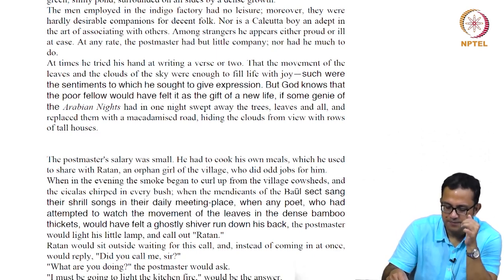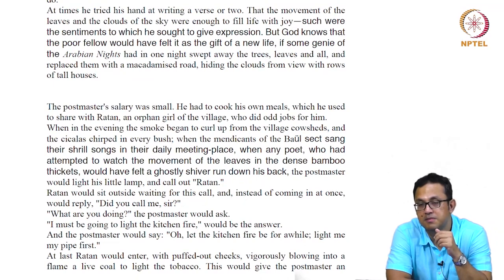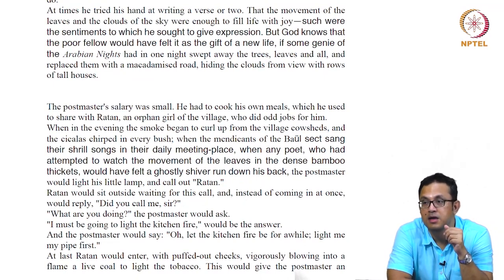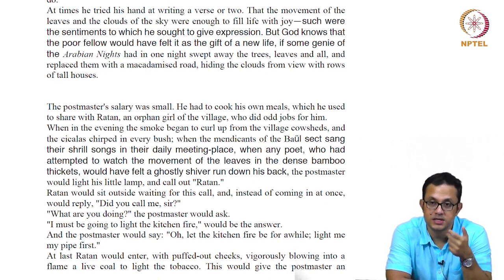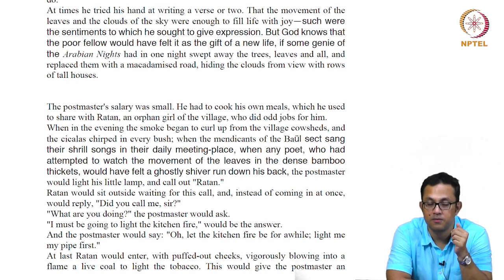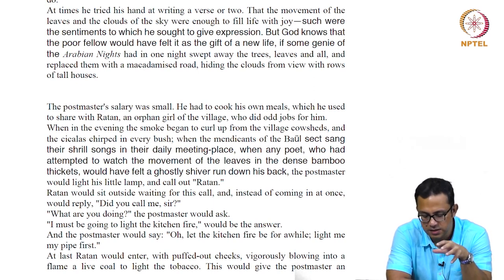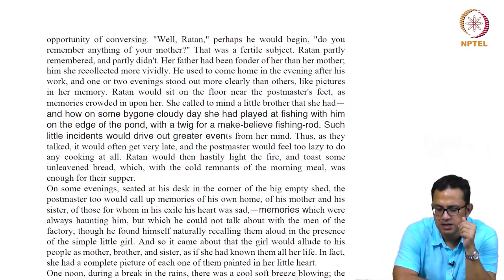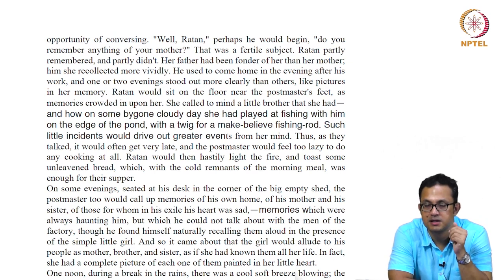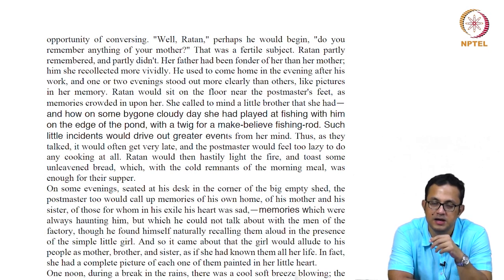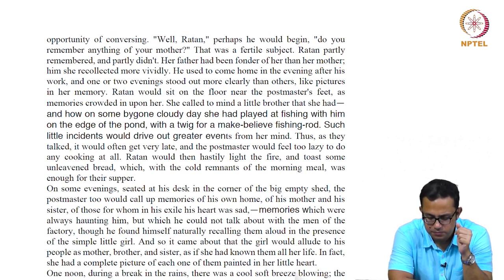The postmaster's salary was very small and he had to cook his own meals, but he had a little girl called Ratan who would run errands and do odd jobs for him. He started teaching her the letters of the alphabet, and she picked up very quickly. So he became a mentor figure for her in that rural setting. We are told that Ratan's parents were dead — she was essentially an orphan — and that informs the entire parental politics and the parental emotion that the postmaster establishes with Ratan.